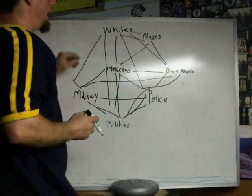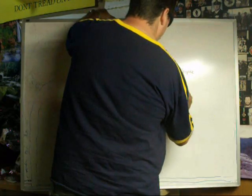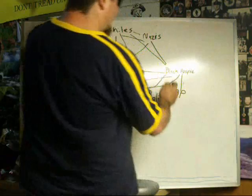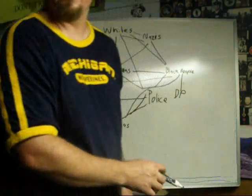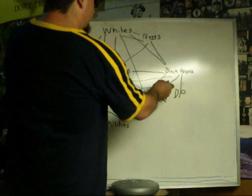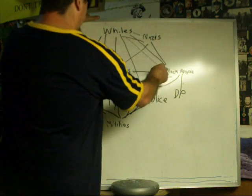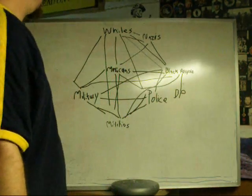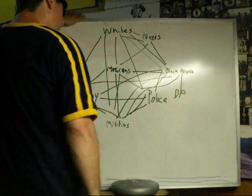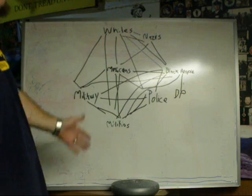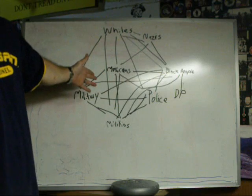And then, out of the black people, we can pull out the black panthers. I'm just going to put BP for that. The black panthers don't like black people that associate with whites. And obviously, they don't like whites. And from what I've seen, they don't like the police and the military. Damn. Oh, and the militias. Holy shit. Now, just look how divided it up. And we can take it down even further than this. We can break it down into religious groups.